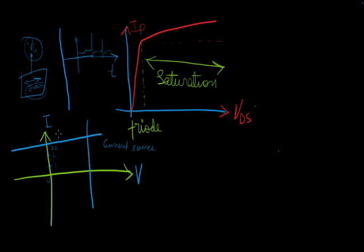Likewise, for the vertical line, for any current, your voltage is going to be constant. So, you guessed it right. It's just a voltage source.